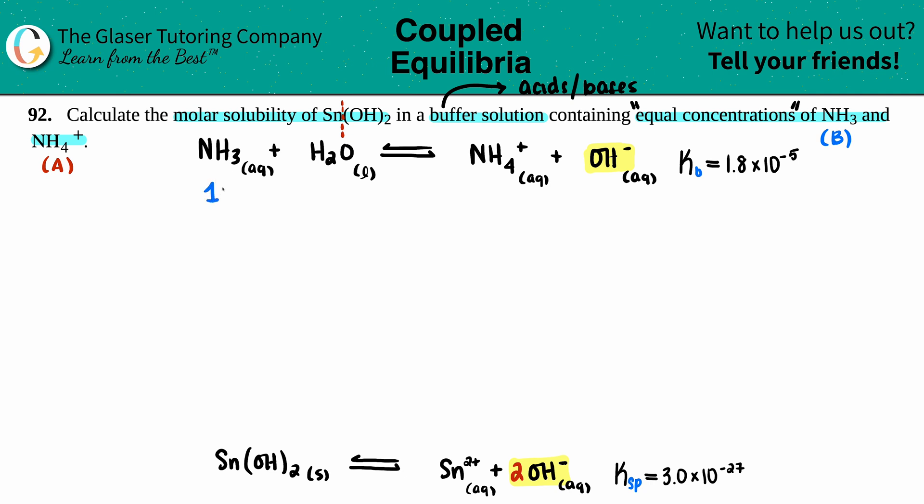I'll put that in blue to show it's a base. We have 1 molarity for NH3, and if you say you have 1 molarity for NH3, you got 1 molarity for NH4+.